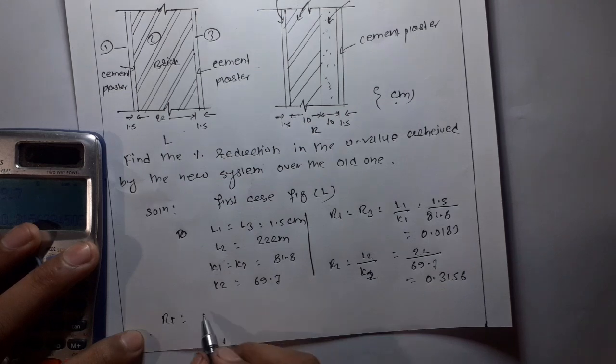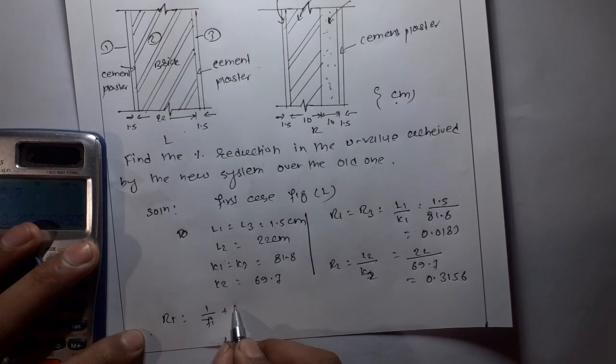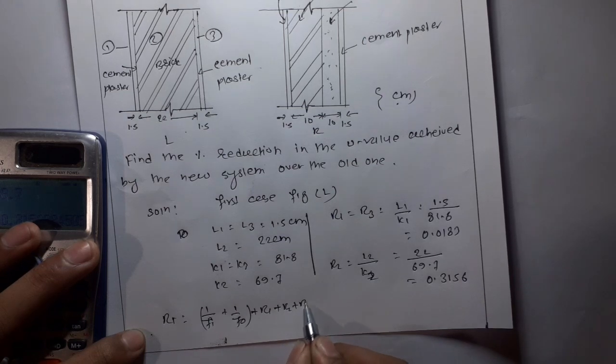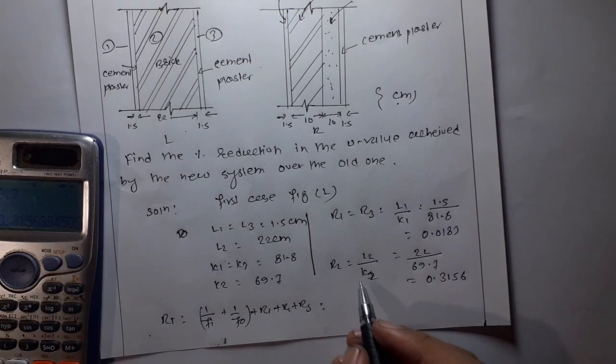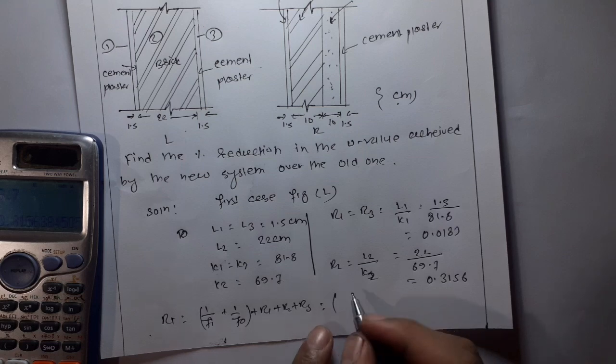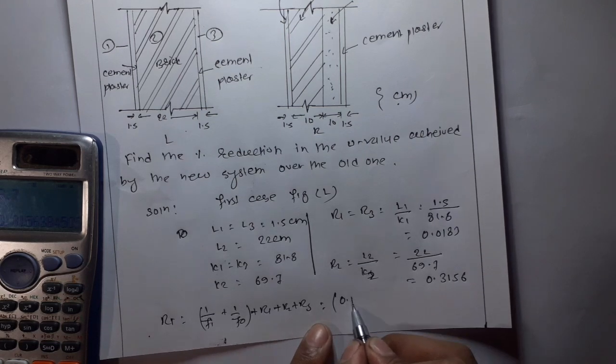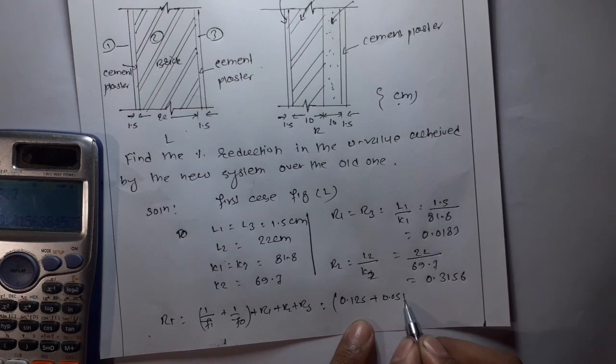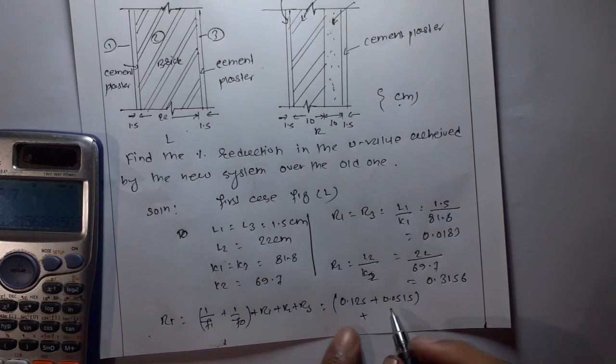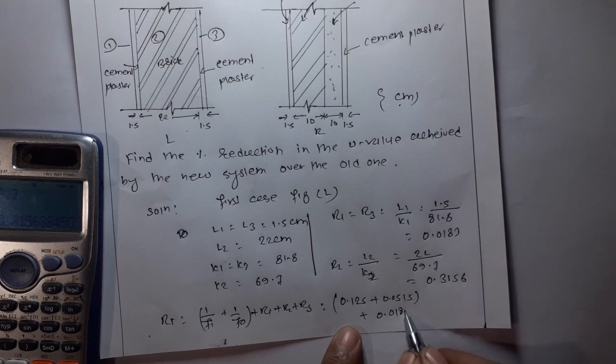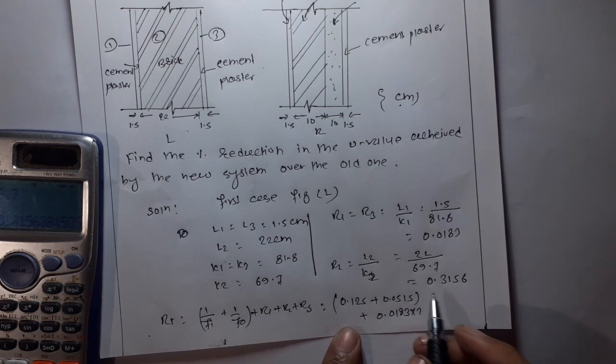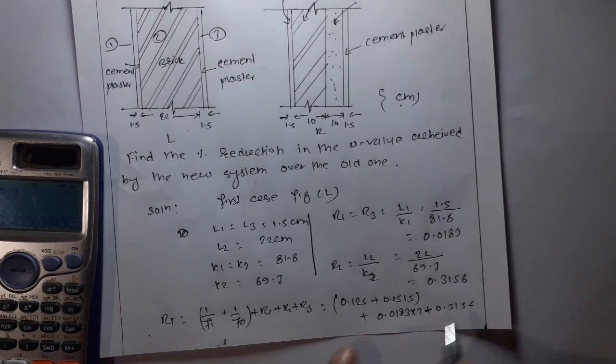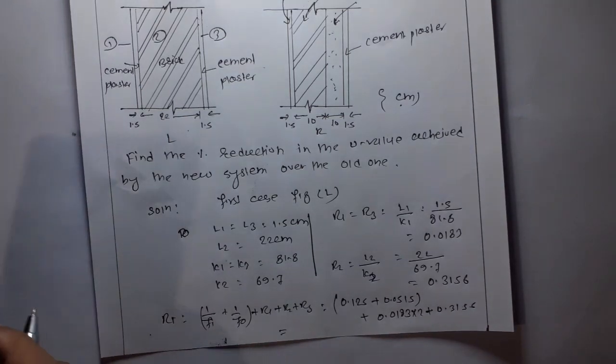R total is one by F1 plus R1 plus R2 plus R3. One by F1 is 0.125 plus R1 is 0.0183 plus 0.156.